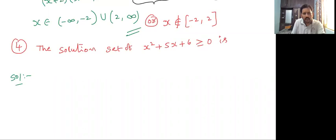Now see the quadratic equation x² plus 5x plus 6 greater than or equal to 0 given. Split into factors: x² plus 3x plus 2x plus 6 greater than or equal to 0. First two terms take x common, x plus 3.